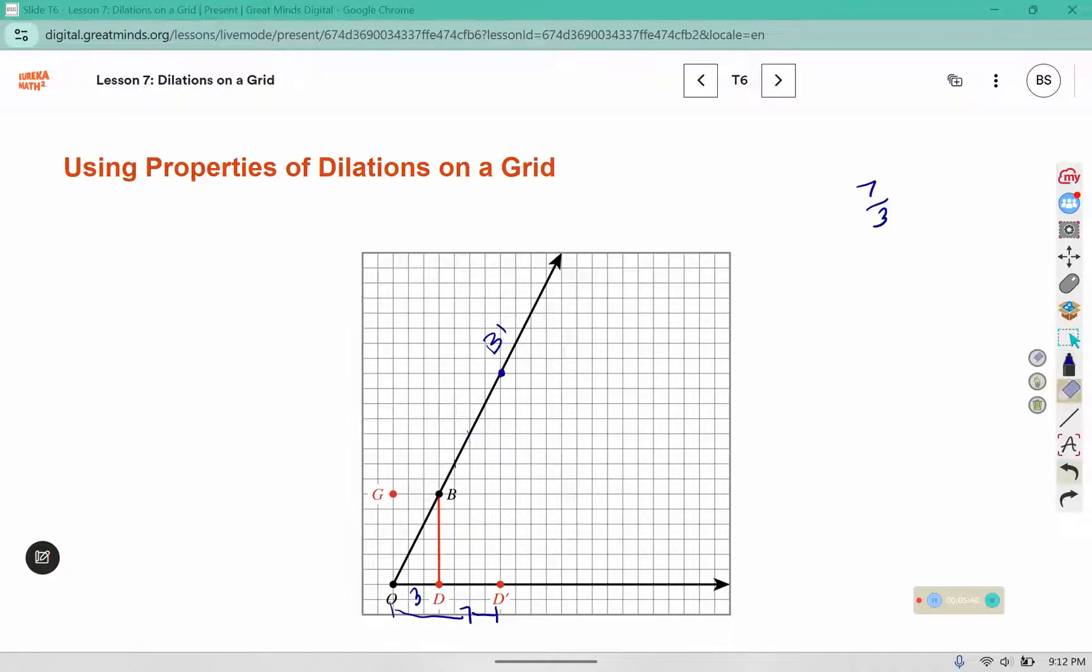We saw in a previous lesson that when you dilate a line segment, it is parallel to the original, and we talked about how these angles are the same, because now we have corresponding angles from 2 parallel lines being cut by that transversal. So there are some properties of dilations that we see here on the grid. Dilating the segment, we get parallel segments. By using that scale factor, we can use that idea of the lined paper on the grid to help us find out where the new coordinate should be.